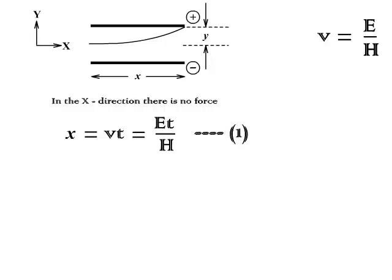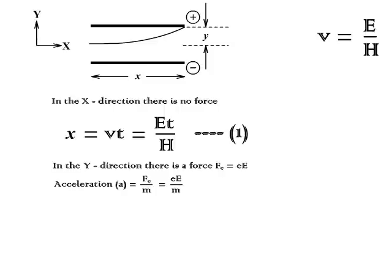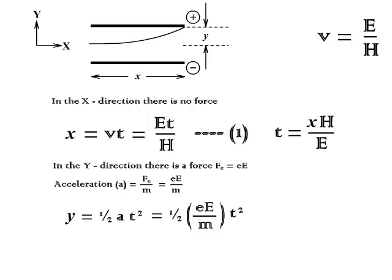In Y direction, there is a force FE equal to eE and an acceleration which is equal to FE divided by M, which is equal to e into E divided by M. Therefore, Y equal to half eE by M T square. Now, we get T equal to X into H divided by E from equation one. Substituting in this equation, we get Y equal to eE by 2M times XH by E whole square, which implies e by M equal to 2YE divided by X square H square.